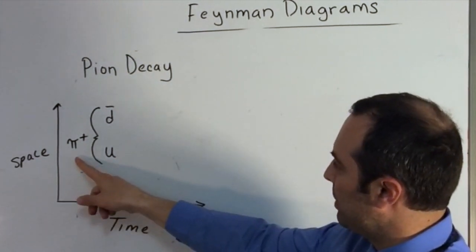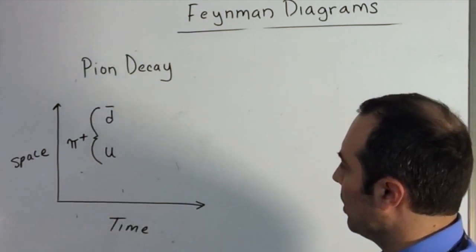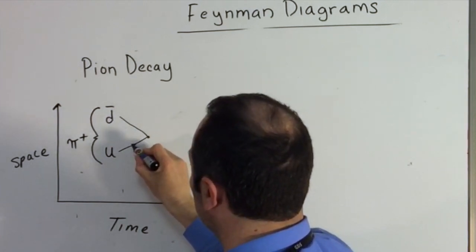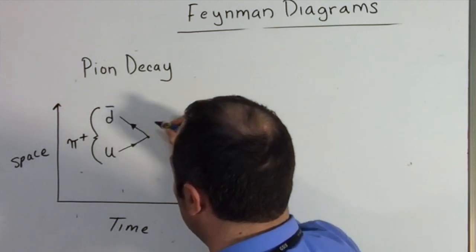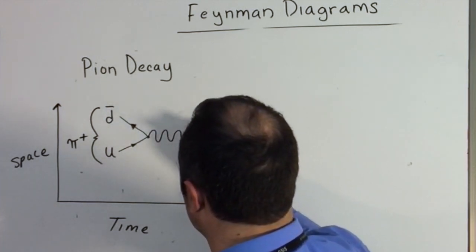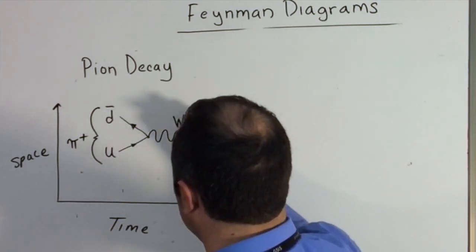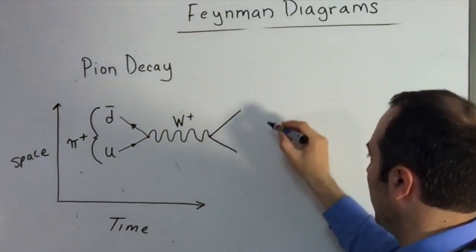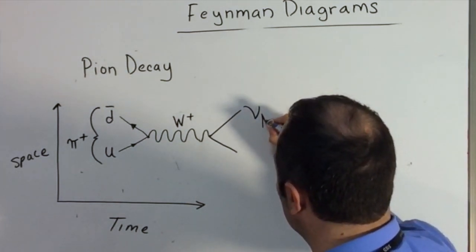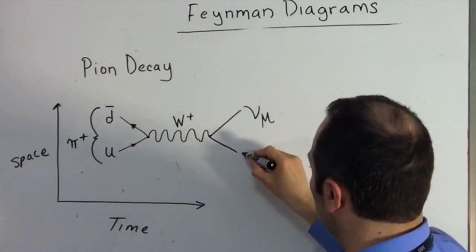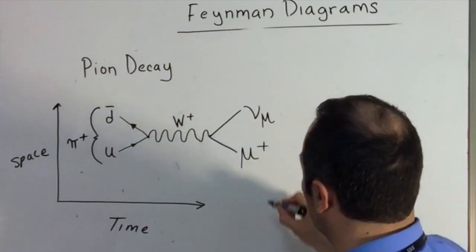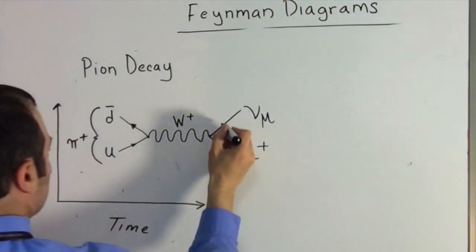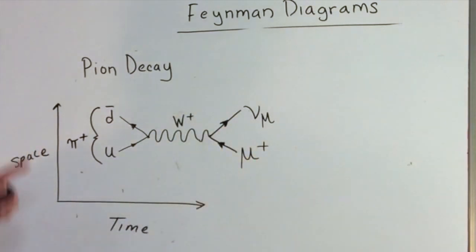Here we've got pion decay. We have a positive pion with an anti-down and an up quark. Our up quark is going to move forward in time, and the anti-down is going to move backwards since it's an antiparticle. They come together to form a boson — the W plus boson. Then it splits again into two particles: one will be our muon-flavored neutrino, and a muon lepton. Because the muon is an antiparticle, it will move backwards; the neutrino will move forwards. This is pion decay.